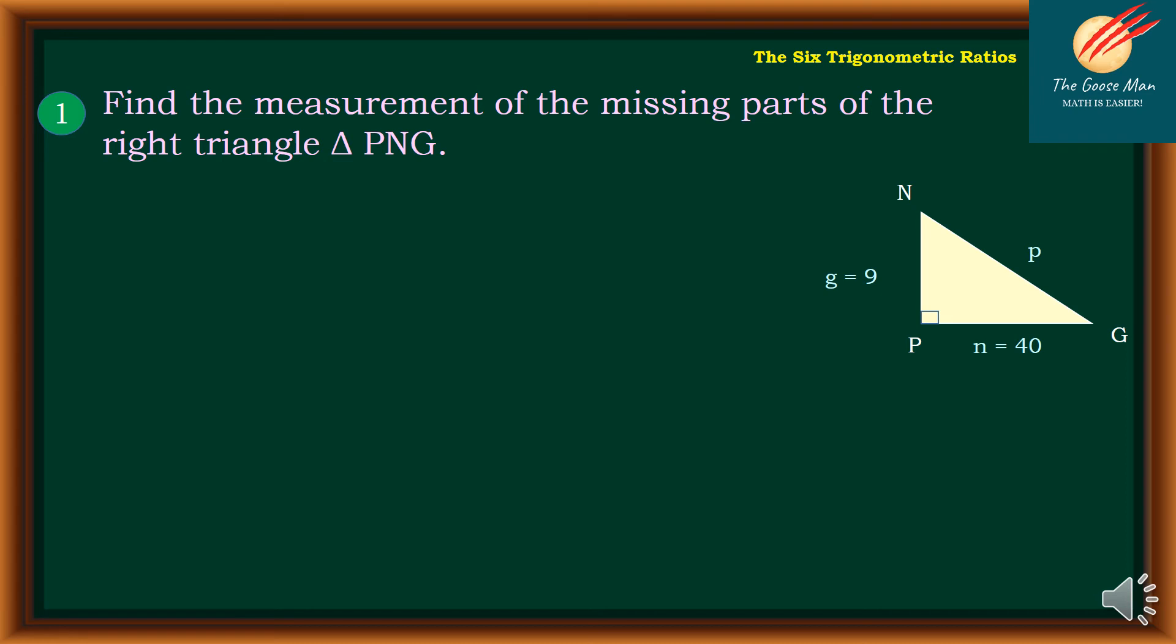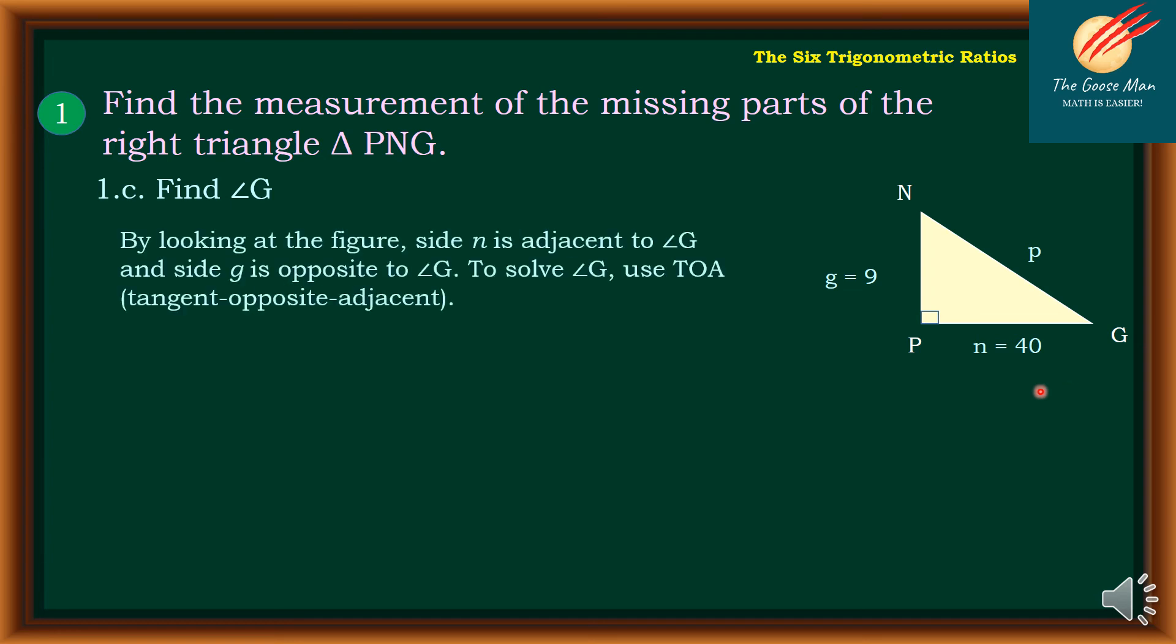Let's move on to the next example. So this time, find angle G. So if we will look on our illustration, so side n is adjacent to angle G. So this is the side n, while the side g is the opposite of angle G. To solve angle G, we use the TOA. It means tangent opposite-adjacent.